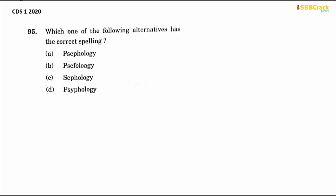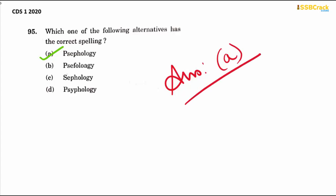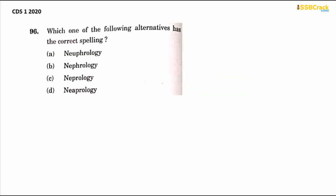For those who don't know, psephology is basically a statistical study of elections and trends in voting. It is spelled with a P at the beginning, but the P is silent, so it is pronounced as 'sephology'. The answer is option A.